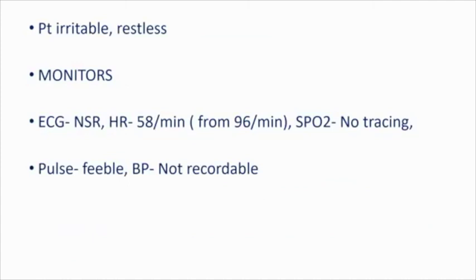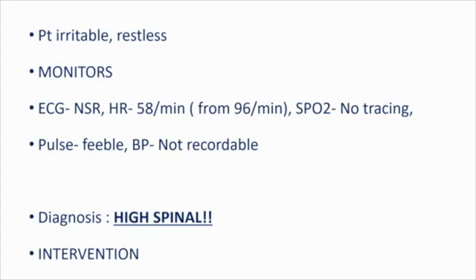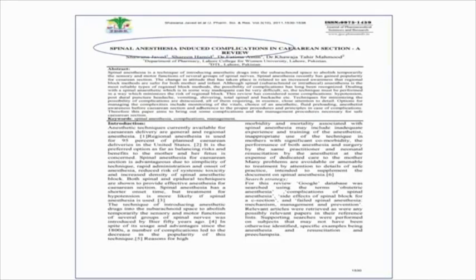The obstetric resident was searching for IV access on the lower limbs. I looked at the patient — she was irritable and restless. On the monitors I could see a normal sinus rhythm on ECG; heart rate was 58 per minute, down from a baseline of 96. On the saturation probe there was no tracing. The pulse was feeble and BP was not recordable. Anyone can diagnose this condition — yes, it was high spinal — and the necessary intervention was made, which brought things back to normal. So can our simple, easy, rapid, predictable spinal anesthesia cause this near-miss crisis in obstetrics? The answer is a big yes.